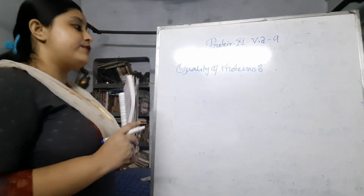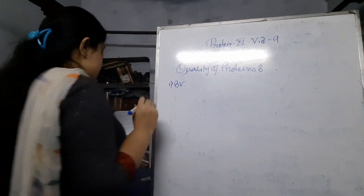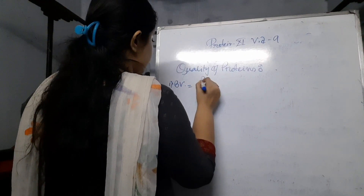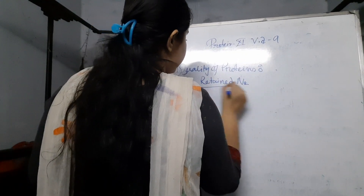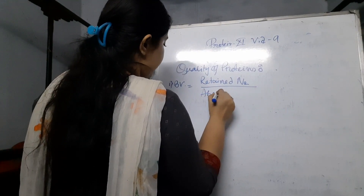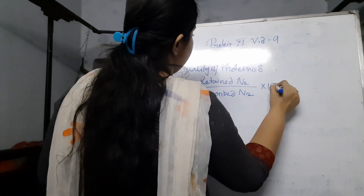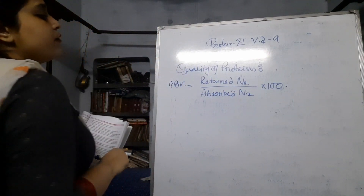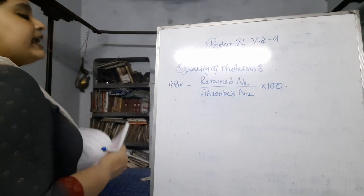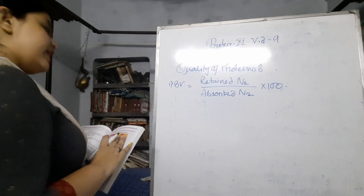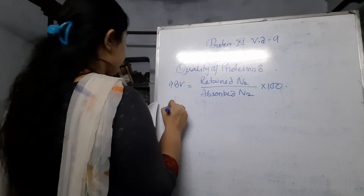The first thing I am talking about is BV, or biological value. What is the ratio of it? BV is equal to retained nitrogen divided by absorbed nitrogen, into 100. That is, from the food, the nitrogen percentage that is absorbed — retained by the absorbed part of the nitrogen, into 100 — is the BV, or biological value, of some food or some protein.